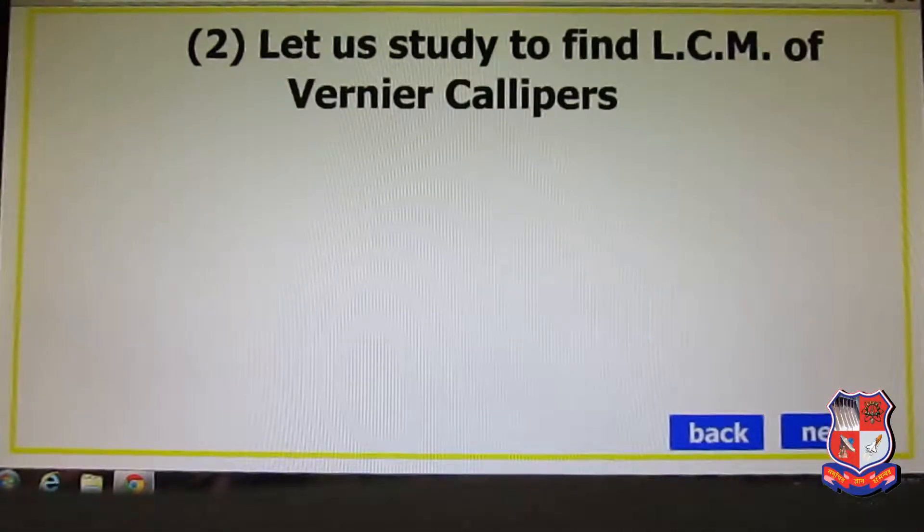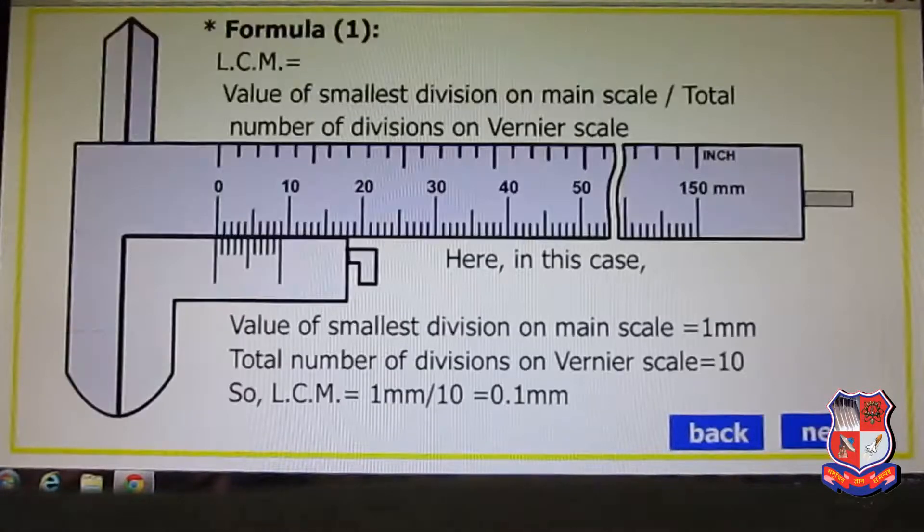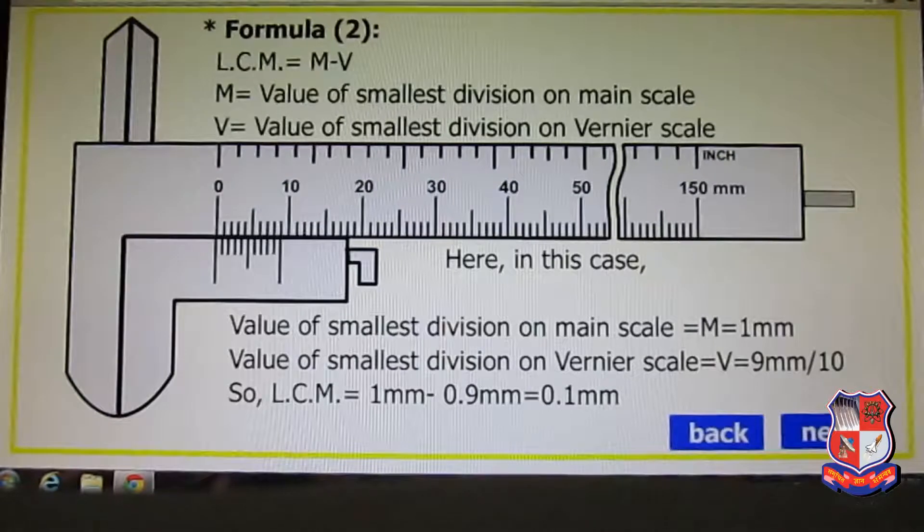Let us study how to find least count measurement. Formula 1: L.C.M. equals value of smallest division on main scale divided by total number of divisions on vernier scale. Here in this case, the value of the smallest division on the main scale is 1 millimeter, and the total number of divisions on the vernier scale is 10. So least count will be 1mm divided by 10, that is 0.1 millimeter. Now, Formula 2: least count measurement equals M minus V, main scale division minus vernier scale division.